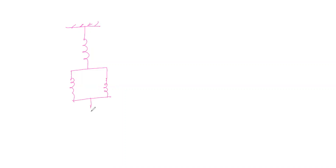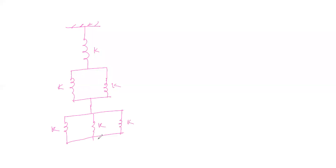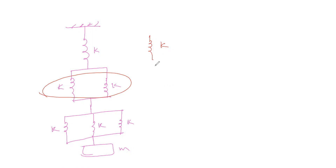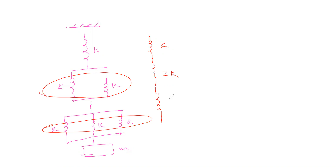In the third problem, we have one spring, then two springs connected in parallel in series to it, then three springs connected in parallel. All spring force constants are k. Simplifying: the first spring is k, the two in parallel give 2k, and the three in parallel give 3k. Now all three — k, 2k, and 3k — are in series.